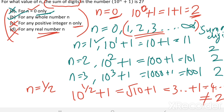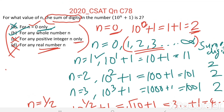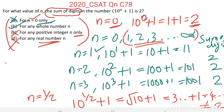Therefore, the correct answer is option B: for any whole number n, the sum of digits in the number 10 power n plus 1 is 2.